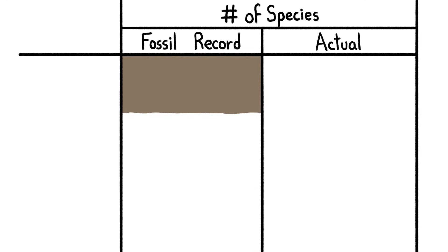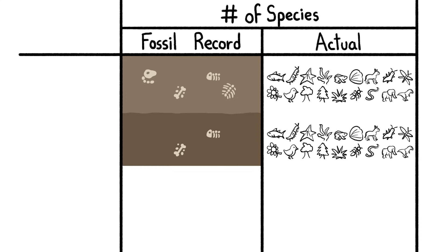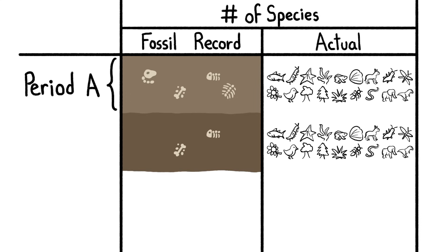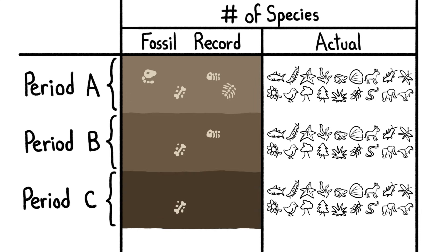In fact, the fossil record only captures a tiny fraction of the life that has ever existed on our planet, but it also captures a different fraction from one period to the next. In general, the record gets less and less complete the further back in time you go, but that trend is complicated by several other factors.